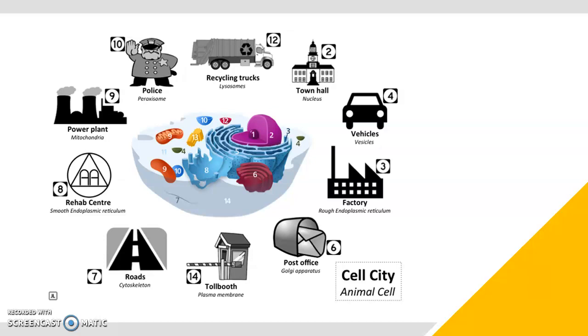Last but not least, we have the roads and the cytoskeleton represents the roads. And that's number seven, which I'm having trouble finding on the animal cell. But just imagine a long fibrous protein, typically a microtubule is what it's called, extending across the cell.